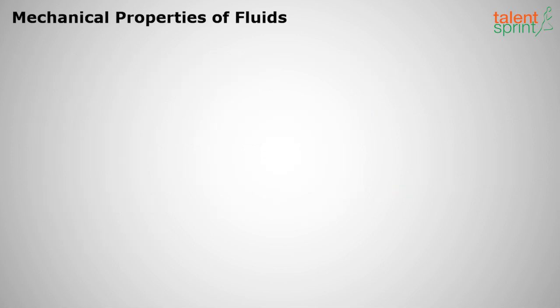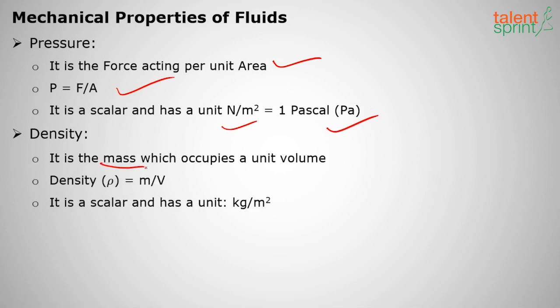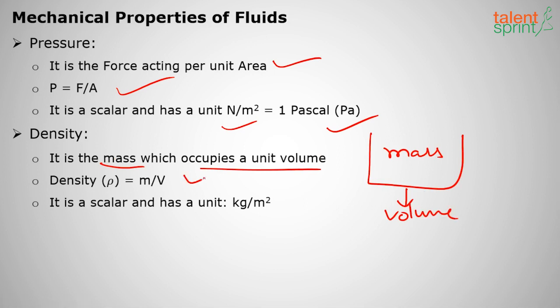Pressure is a force acting per unit area — Newton per meter squared — and it is a scalar. One Newton per meter square is one Pascal. Density is mass per unit volume. It is also a scalar, with units of kg per meter cube.